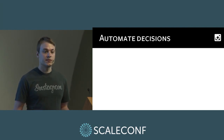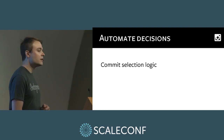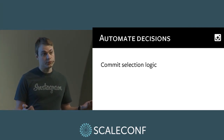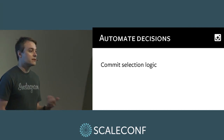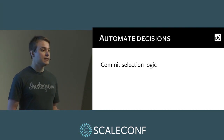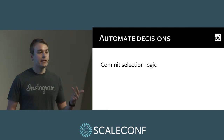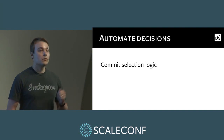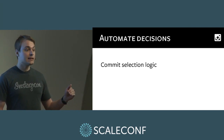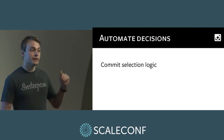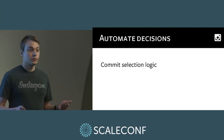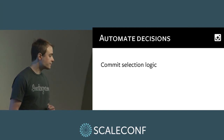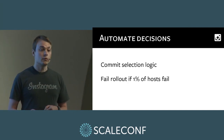Then we needed to automate decisions currently made by humans. The first was commit selection: if there were multiple commits in master, which one do you deploy? The initial logic was simple: always pick a commit that had passed tests, pick as few commits as possible, and never more than three. If the next commit had a clean test run, deploy one commit at a time. If the next commit failed but the one after passed, deploy two commits — up to three. If there were more than three without clean test runs, we wouldn't automatically select a commit.